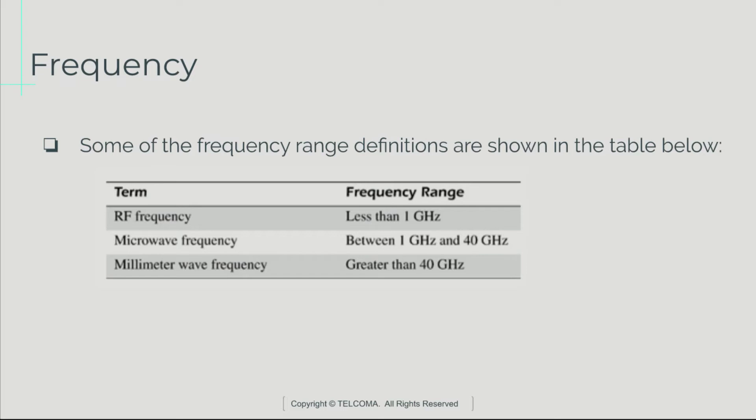This table shows some of the frequency range definitions. The first column shows the term and the second column shows the frequency range. For RF frequency, the range should be less than 1 GHz. For microwave frequency, the range should be between 1 GHz and 40 GHz. For millimeter wave frequency, the range should be greater than 40 GHz.